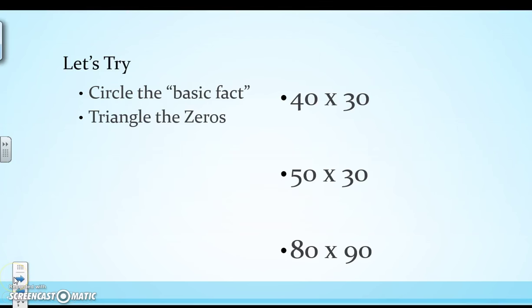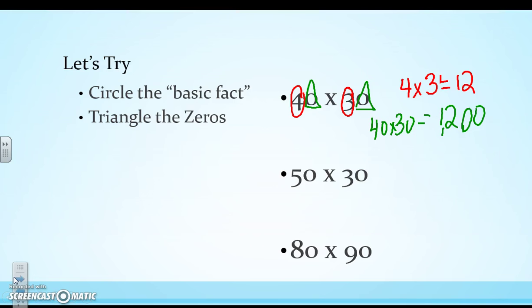So let's try. So the first step is we're going to circle the basic facts. So in this first one, I have 40 times 30. So my digits that aren't 0s are 4 and 3. So I'm going to multiply those numbers and get 12. And then I'm going to triangle the 0s that are in my two factors. When I triangle those 0s, I know there are two 0s in my factors. Therefore, there need to be two 0s in my final product. So 40 times 30 is 1,200.